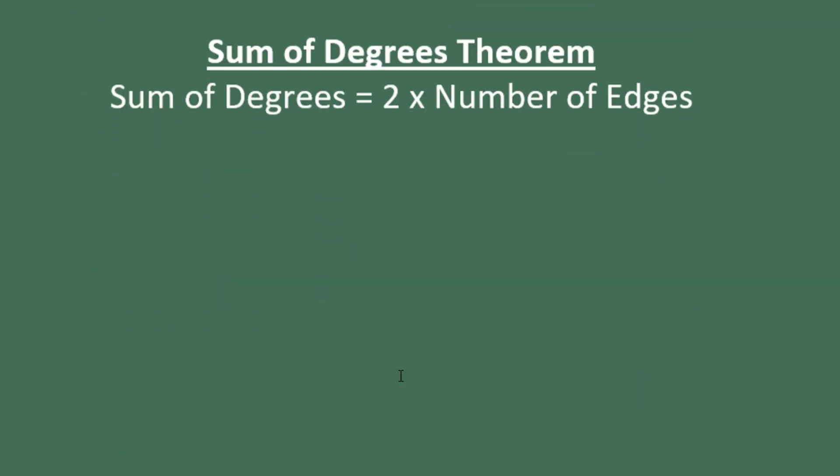This is called the sum of degrees theorem. The sum of the degrees is twice the number of edges. This is very useful because if we already know the sum of degrees, we can figure out the edges by multiplying by two. And if we already know the number of edges, we can figure out the sum of the degrees by dividing by two.